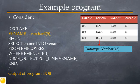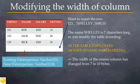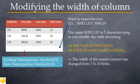When this program is executed, the name 'Bob' will be displayed on the screen. Now let's say you want to insert a new row into the table and the name of the employee is 'Shelley'. The name Shelley is 7 characters long and will fail insertion into the table unless you modify the table to increase the width of the ename column.